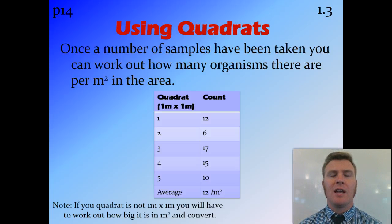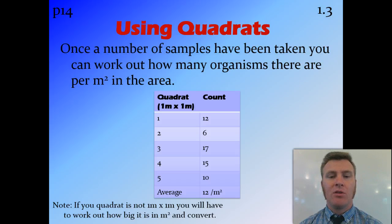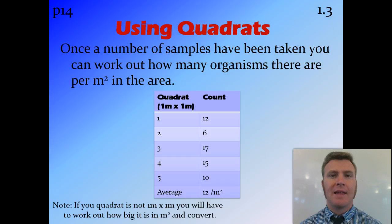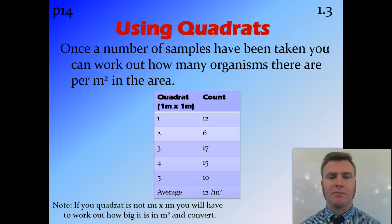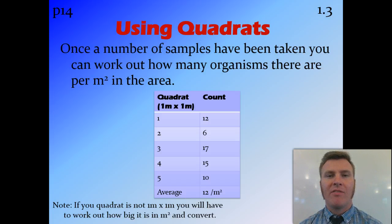Once you've taken a whole range of different samples, you average how many organisms there are and work out how many that would be per square meter. If you're using a one meter by one meter square that's straightforward. If you're using a smaller square — for example, a 50 cm by 50 cm square only covers 0.25 of a square meter — you need to include that in your calculation to get a true number per square meter.